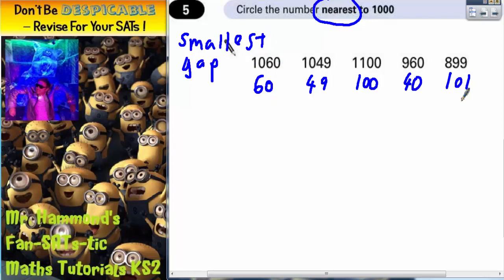And seeing as all these gaps have already been worked out, which is the one with the smallest gap? Well, the smallest gap here is 40. So that must mean that 960 is the nearest one to 1000. So 960 is the number that we need to circle.